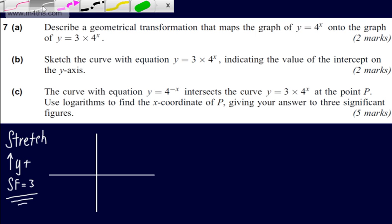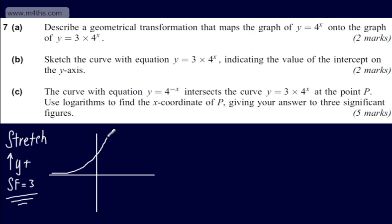The original graph will pass through the point 0,1. We've put a scale factor stretch of 3 on, so this will pass through the point 0,3. So the graph will look something like so, and it will get very steep very quickly. We'll have this point here, and we can say that y is equal to 3 multiplied by 4 to the power of the x.